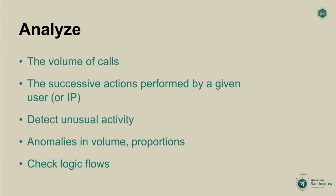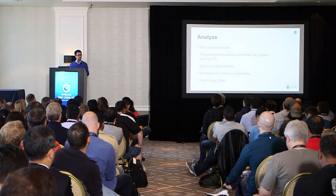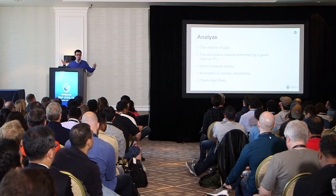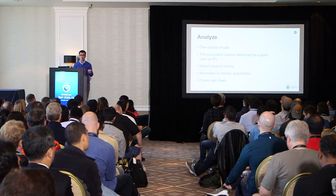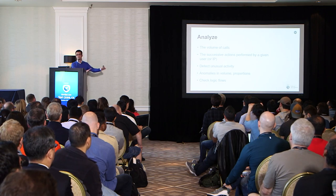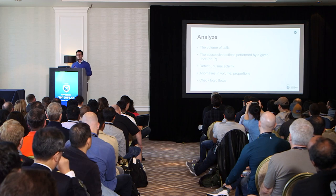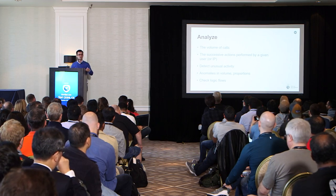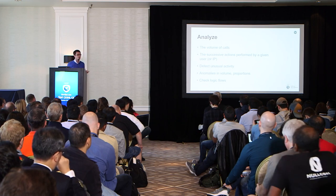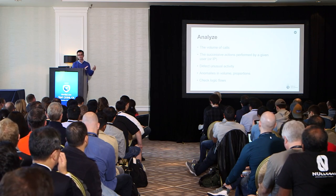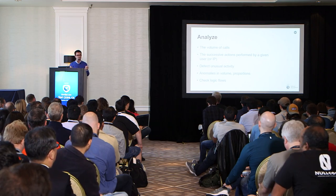Based on this event stream filled with data, what analysis can we do? We could look at the volume of calls — is this function being called a lot or not? We could look at successive actions by a given user, IP, or organization. We could detect unusual activity using machine learning algorithms, random forest, or similar, running on the streaming engine. We can find anomalies in volume, in proportions, per IP, per user, per application, per organization, per group. We could also check logic flows — are these IPs calling these functions in the right order? All of this depends on your business logic.